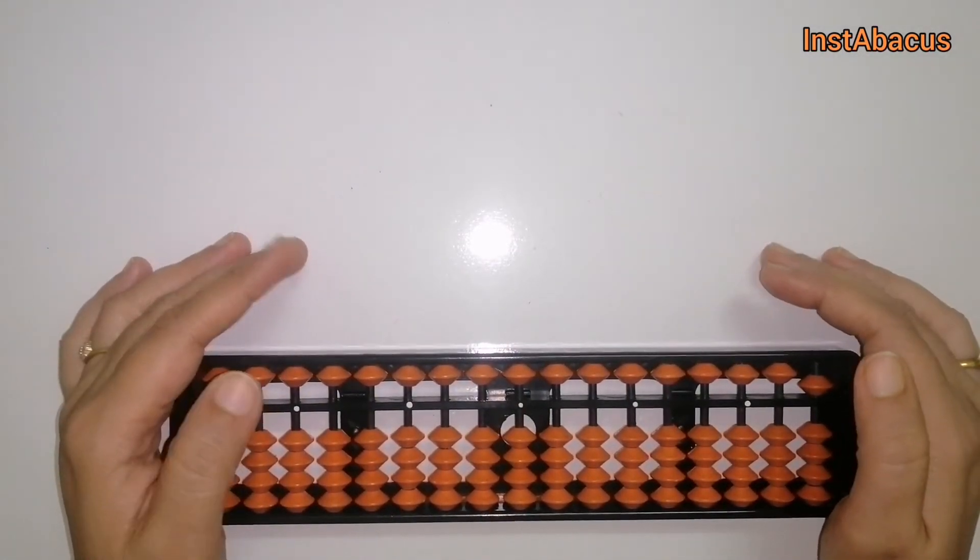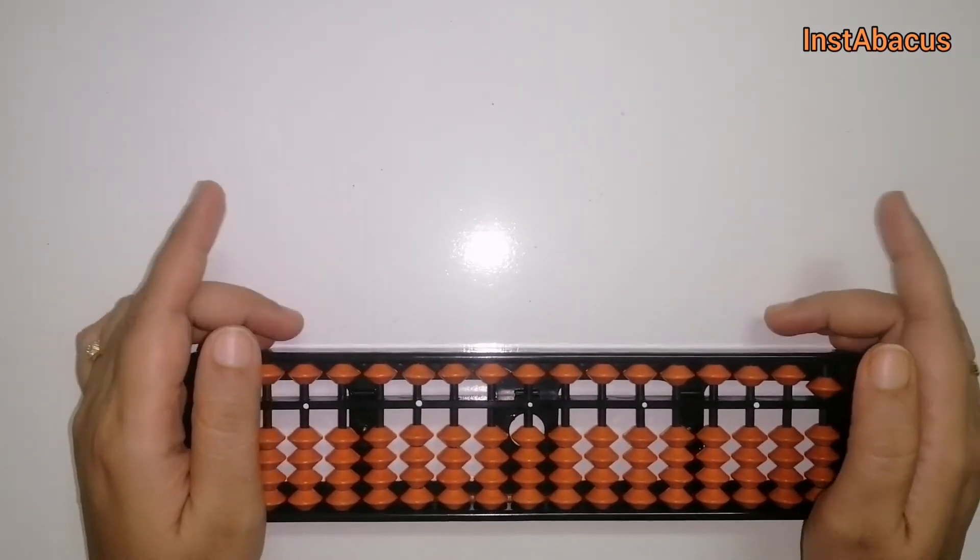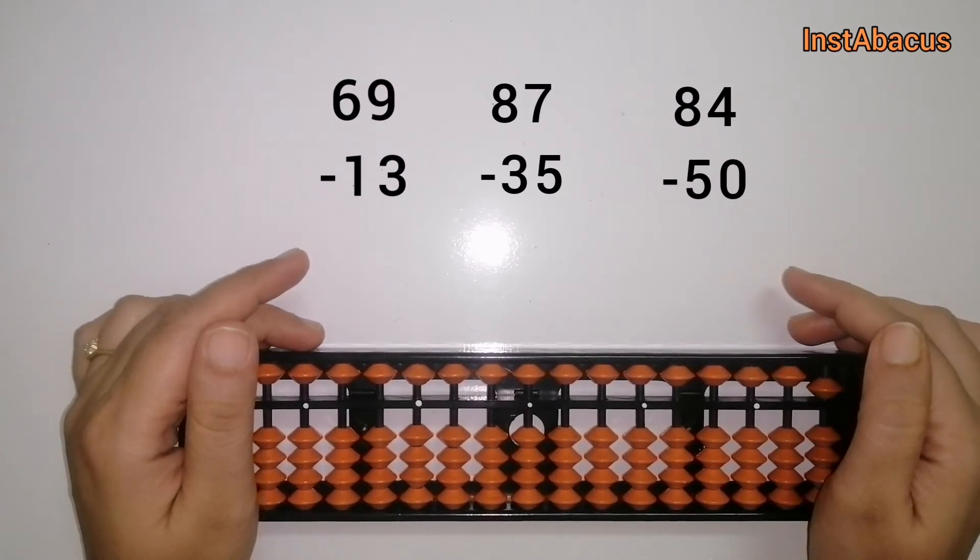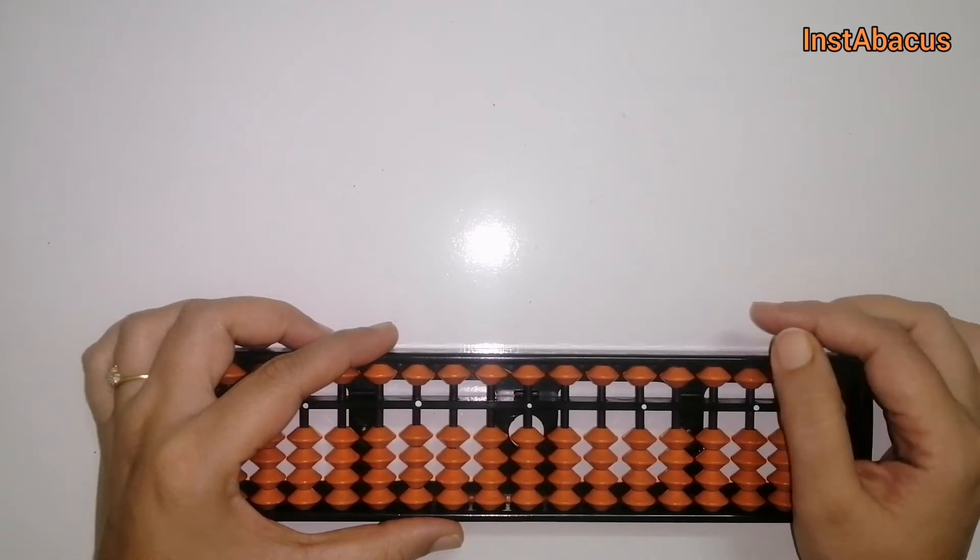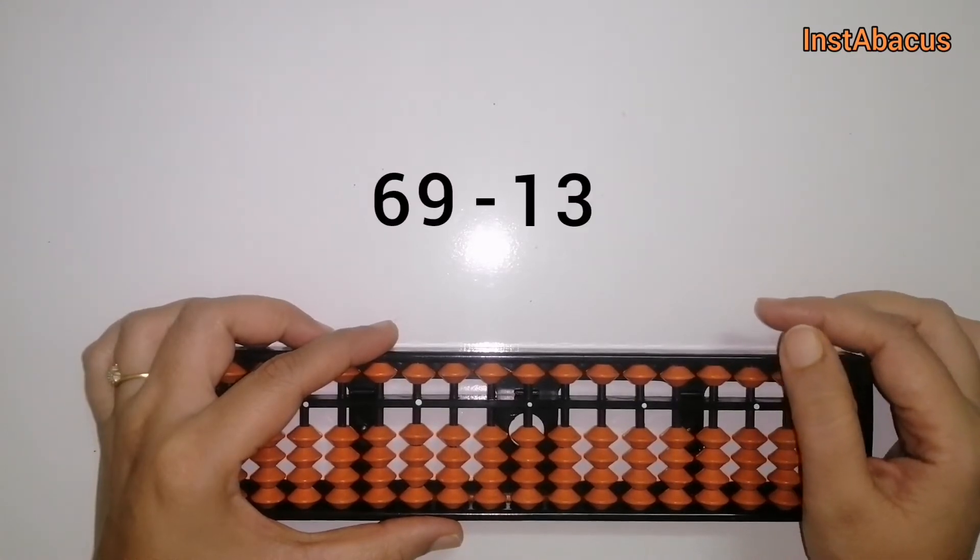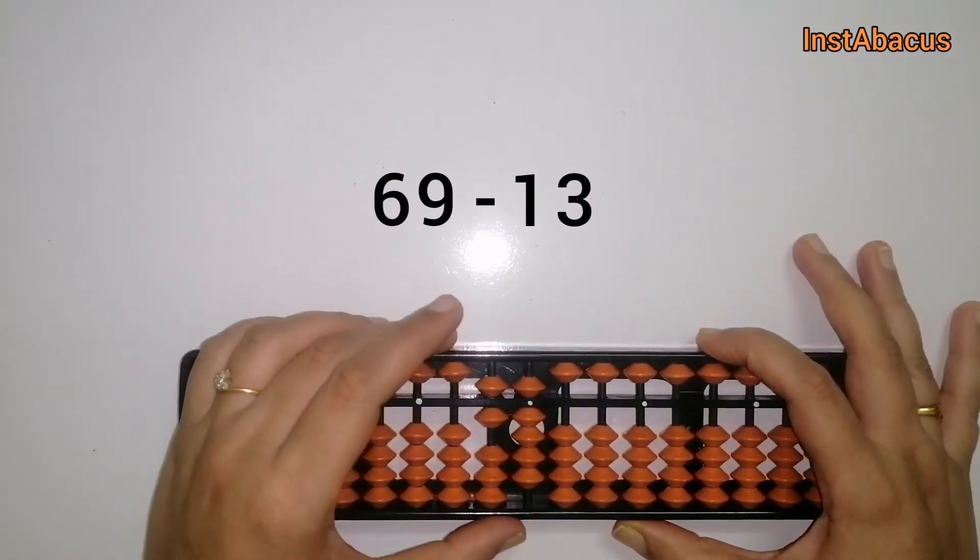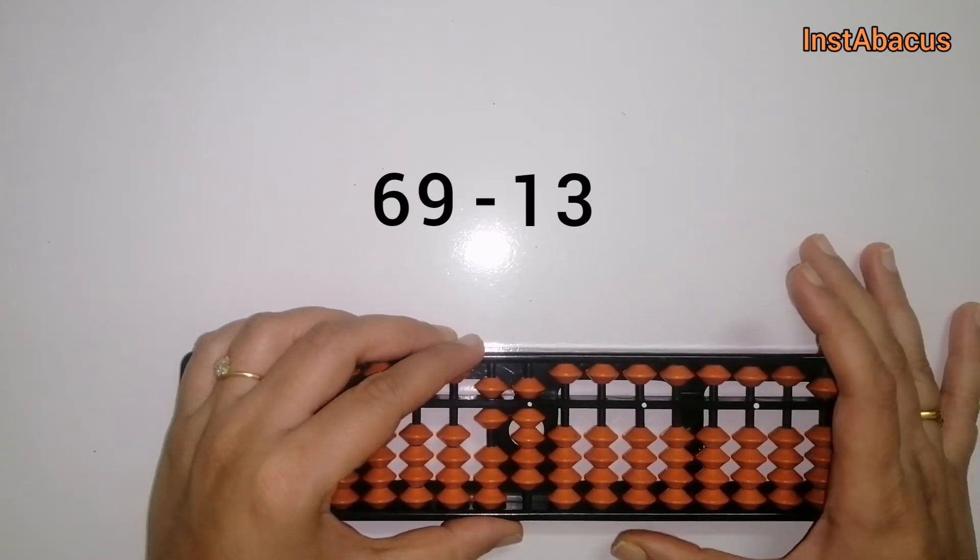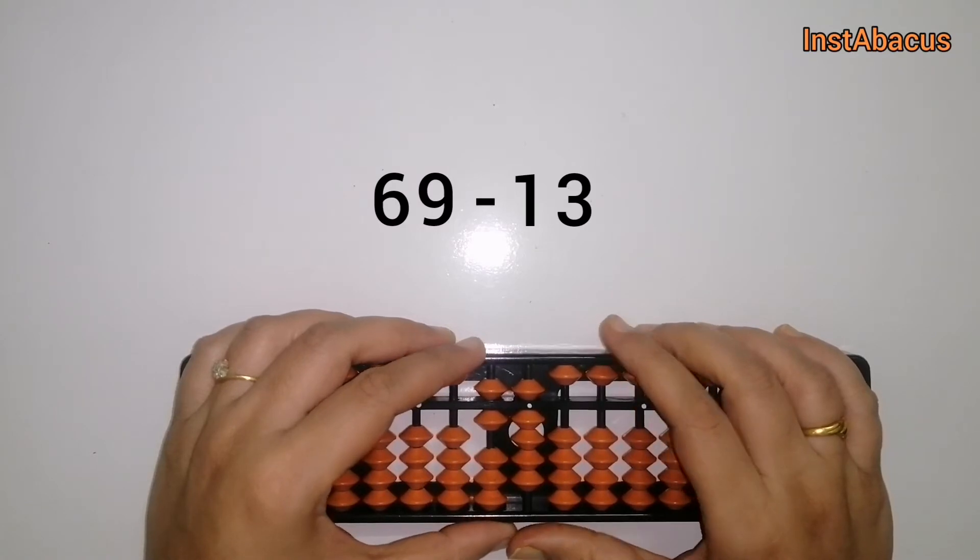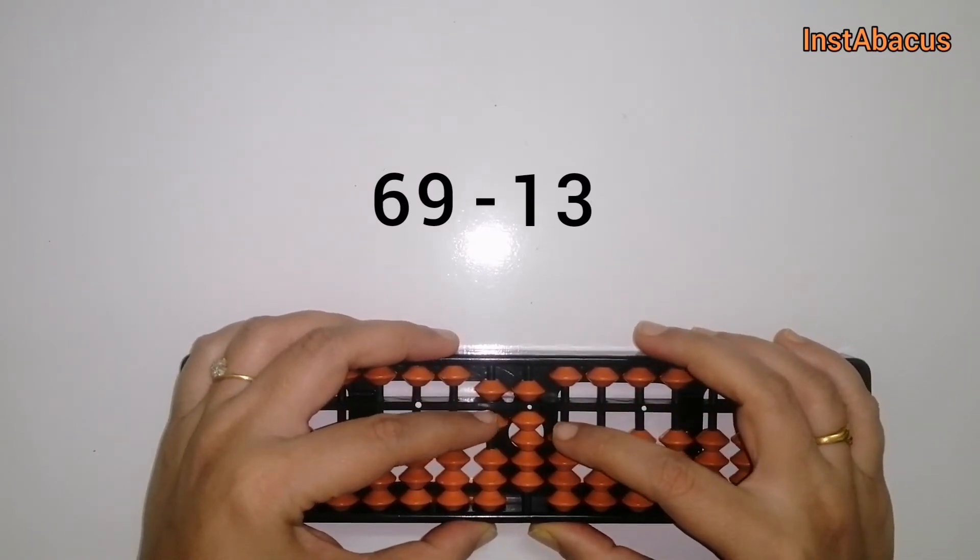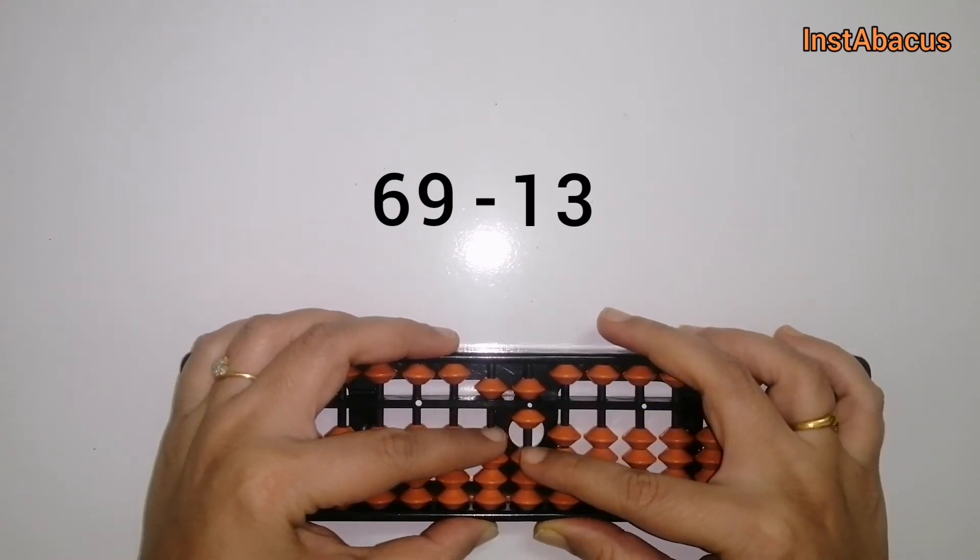We are going to learn simple subtraction of two-digit numbers with the help of these three examples. Let's go ahead with the first one: 69 minus 13. So, 69 on your abacus, right. And now from this we are going to subtract 13. We are going to subtract one here from the tens place and three here from the units place. So 69 minus 13, that is 56. That's correct.